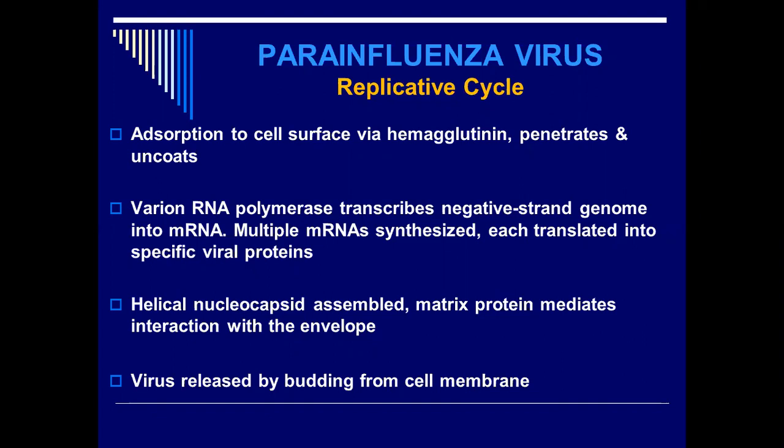This replicative cycle is common to measles, mumps, and respiratory syncytial virus. The virus enters, penetrates, uncoats, releases DNA or RNA. The RNA is transcribed, then translated; specific proteins are formed which make the functional and structural components. And of course the virus is released by budding from the cell membrane.